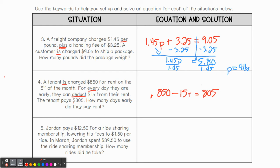Number five, Jordan pays $12.50 for a ride sharing membership, lowering his fees to $1.50 per ride. There's that word per. In March, Jordan spent $39.50 to use the ride sharing membership. How many rides did he take? Well, if he spent $39.50, I know that's going to be what equals. So let's talk about this. He pays $12.50, lowering his fees to $1.50 per ride.